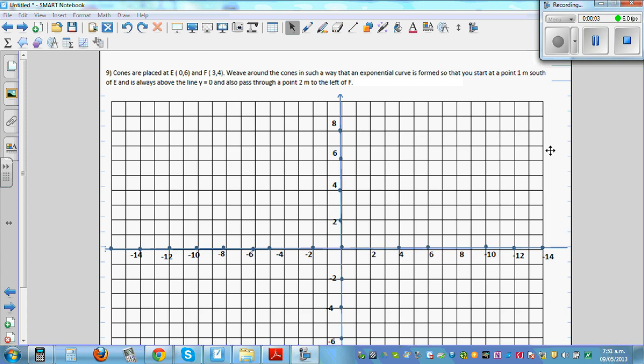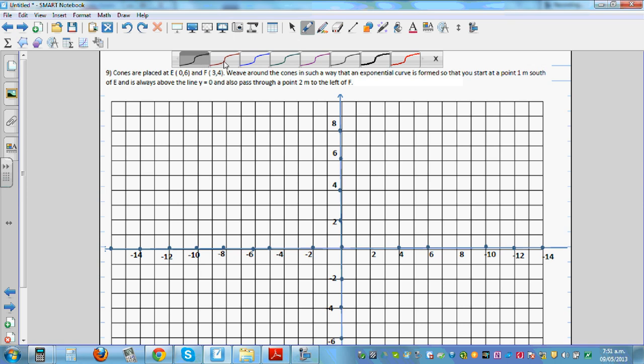Let's look at this question. Cones are placed at E, which is 0,6. So the coordinate of E is 0,6. This is your point E.